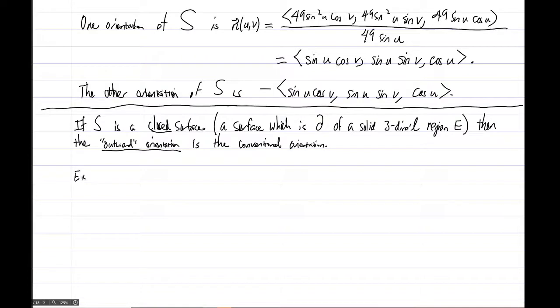So let's as an example actually go back to the example we were just looking at. Just a moment ago we had this orientation of a sphere and we had this orientation of the sphere. So let's actually name these. I'd like to name this first one n sub 1, and let's just clarify that this is of u comma v.